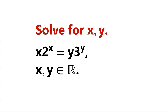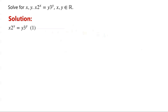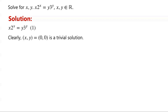Solve this transcendental equation, where x and y are real numbers. There are two variables in one equation, so multiple solutions may exist. Clearly, xy equals (0, 0) is a trivial solution. How do we find other solutions?